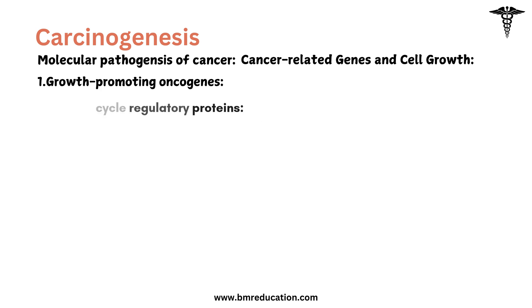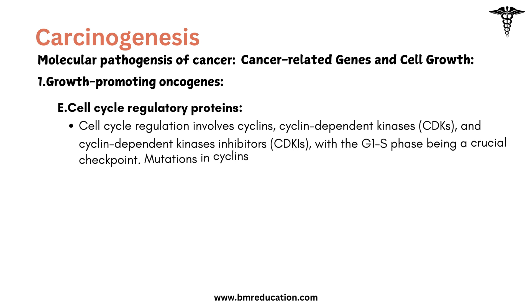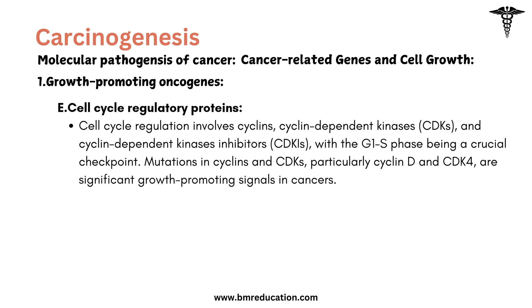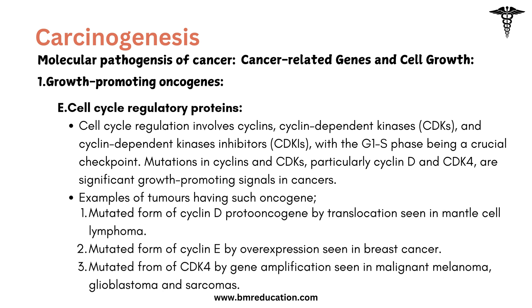Cell cycle regulatory proteins involve cyclins, cyclin-dependent kinases, and cyclin-dependent kinase inhibitors, with the G1 to S phase being a crucial checkpoint. Mutations in cyclins and cyclin-dependent kinases, particularly cyclin D and CDK4, are significant growth-promoting signals in cancers.